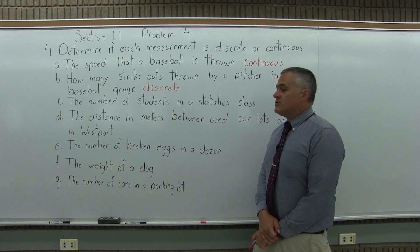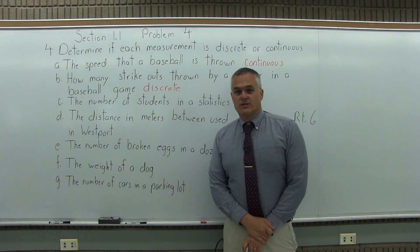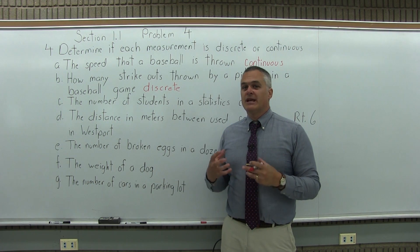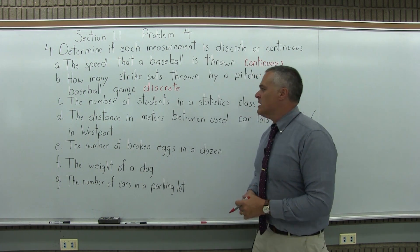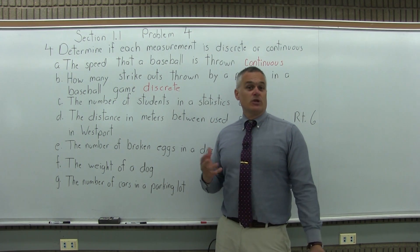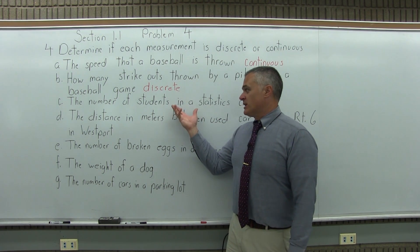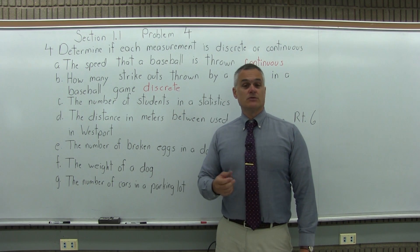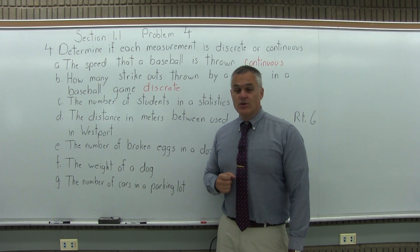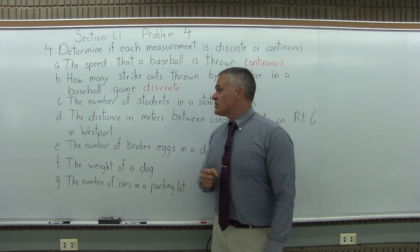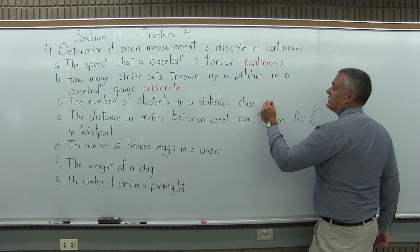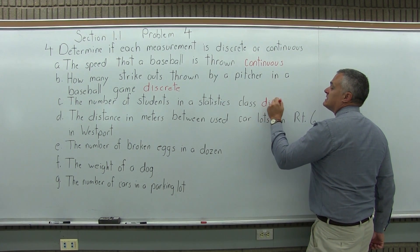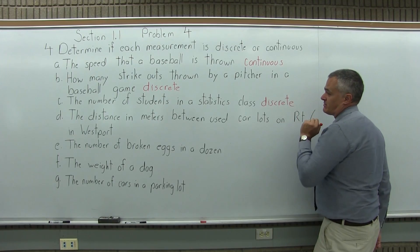Part C: the number of students in a statistics class. Same question — can you have numbers where you can't get an answer in between, or can you always have an answer in between? How many students might you have? Let's say 22 students — that's a possible answer. Could you have 23 students? Sure. Could you have 22.6 students in a statistics class? No. So there are certain numbers where you cannot have an answer in between, which makes the number of students in a statistics class a discrete measurement.